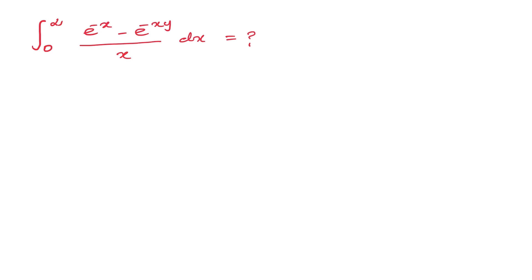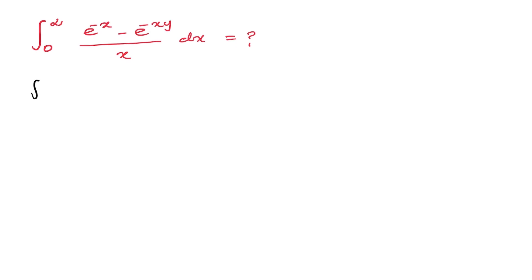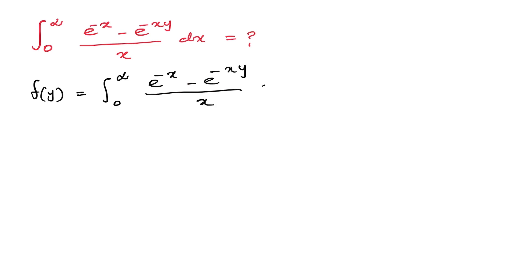...we have the integral from 0 to infinity of (e^(-x) minus e^(-xy)) over x, dx. As the first step of Feynman's technique, we define a function. Let's take f(y) equal to the integral from 0 to infinity of (e^(-x) minus e^(-xy)) over x, dx.